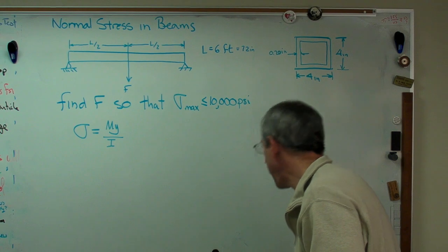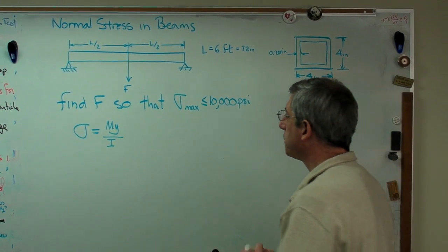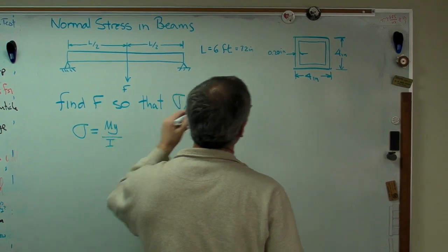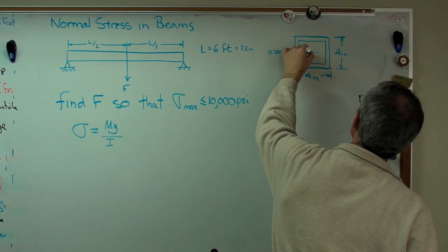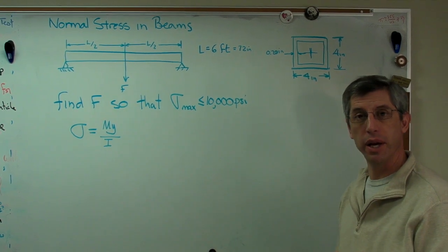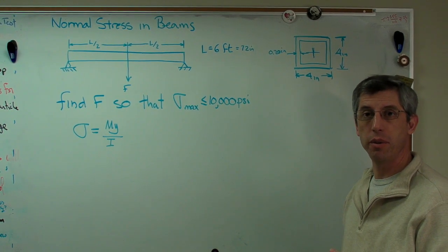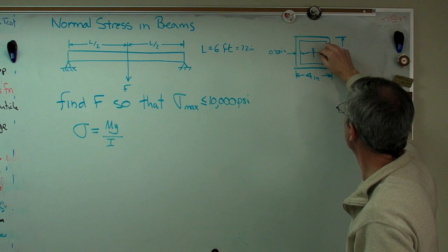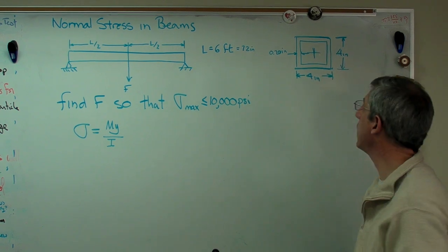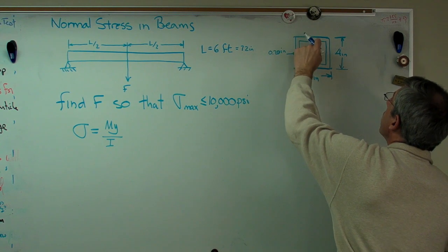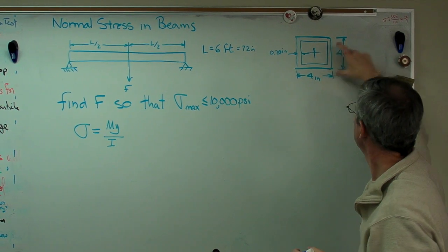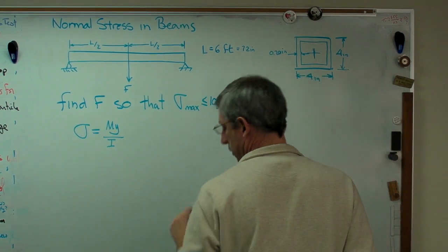All right, so back to the problem now. We know that σ is 10,000 psi. Y is the distance from the centroid of the beam to the place where stresses are going to be highest. So what we're trying to do is go from the center of the beam, the centroid, to as far away from the centroid as we can get. Well, in this case, that's here to the outer edge, either positive or negative, and that will be two inches, half the cross-sectional height.